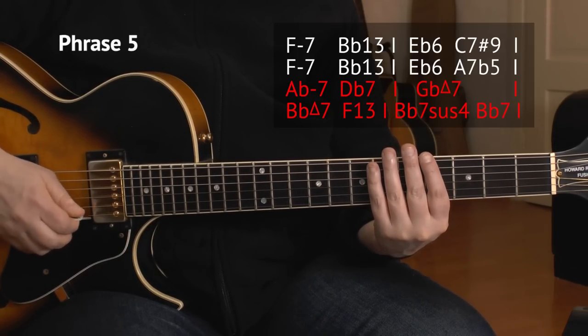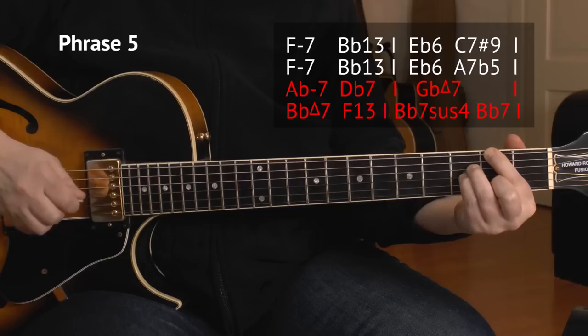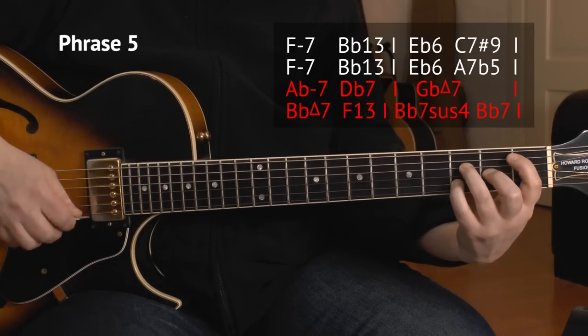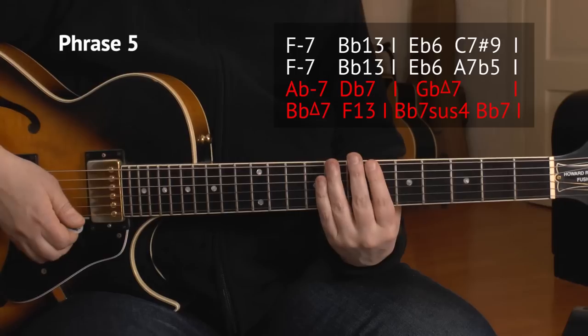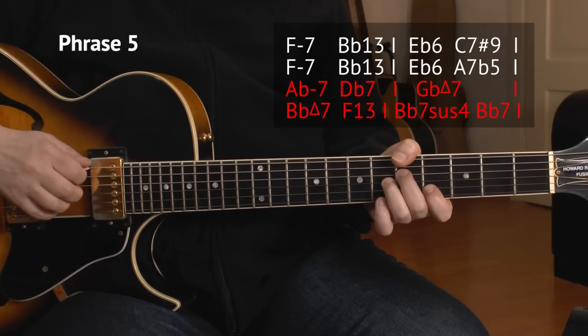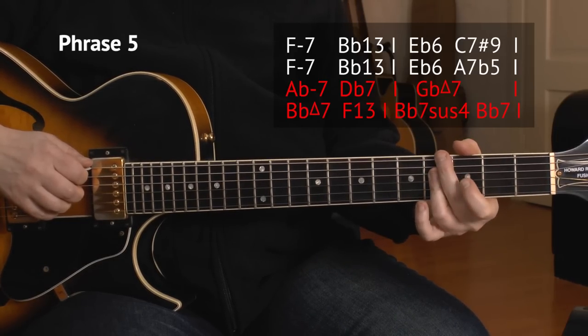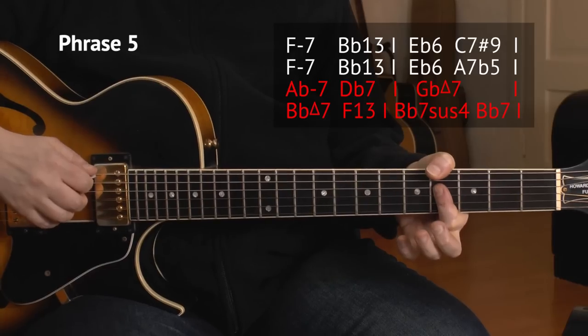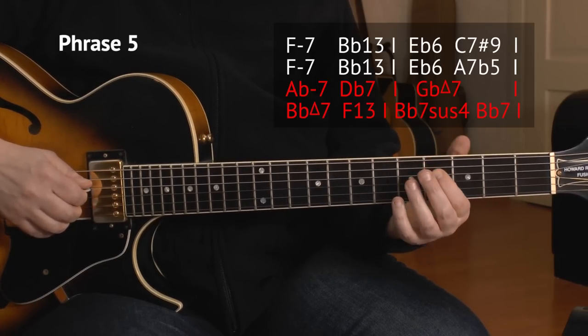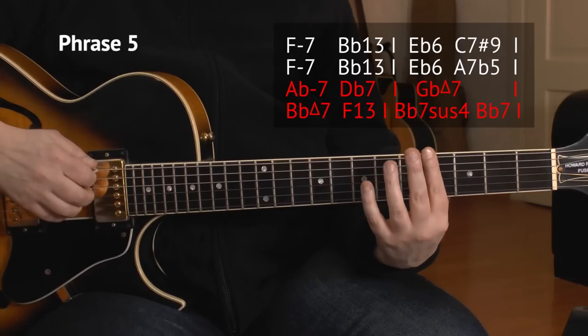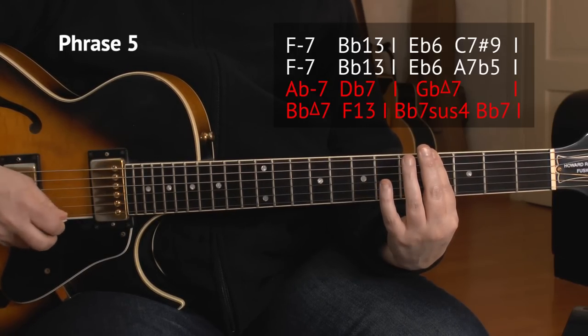And here are the last 4 bars of the B section, and this is phrase number 5. We have that resolution of that tritone substitute, and we move to the A flat. You could fret like this, but in this case, it's quicker for me to just play it like this. So 4th is the A flat, and then the G and B string as well on the 4th fret.